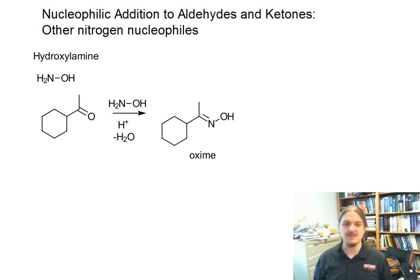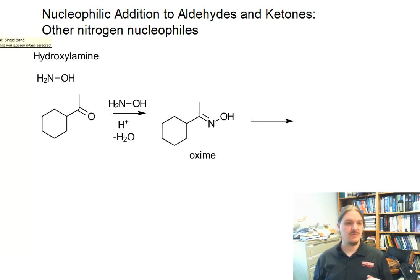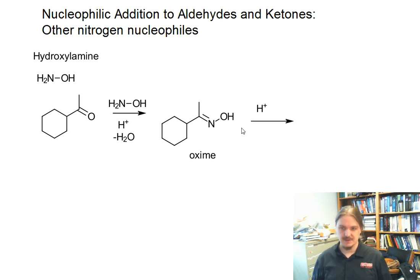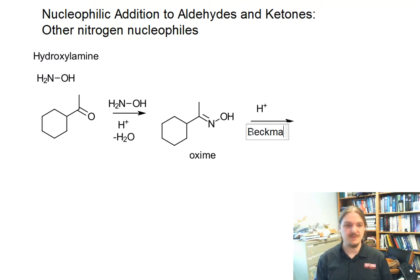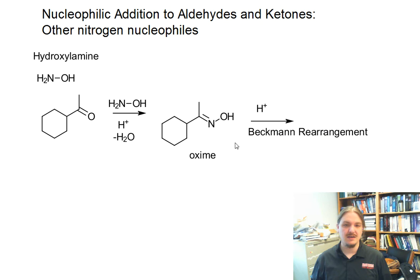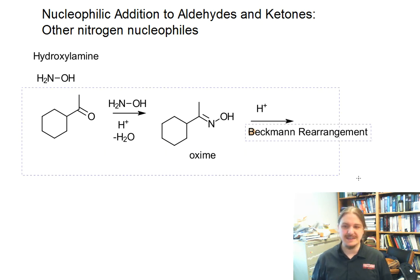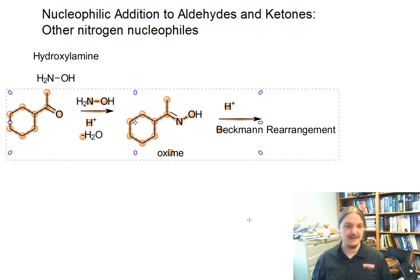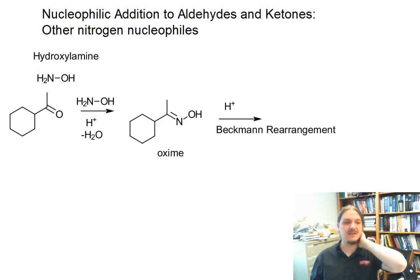Oximes themselves are an interesting class of compound in that they can undergo rearrangements to amides. That's called the Beckman rearrangement, or it's one of the Beckman rearrangements. I'm not going to talk about that mechanism or the regioselectivity, but there certainly are regioselectivity issues. I happen to have chosen a case where there's a methyl group on one side and a hydrogen on the other.